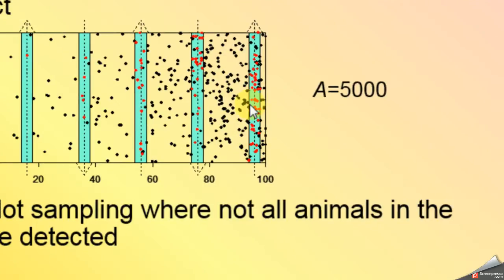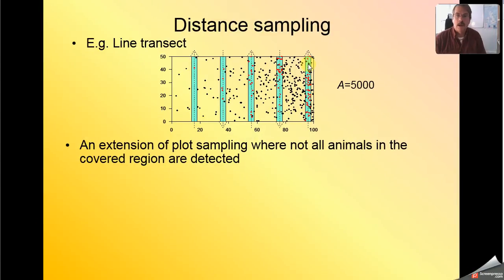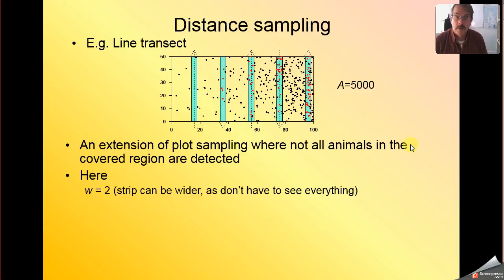If you look closely at that plot, you'll see not only red dots inside the green boundaries, but also a few black dots. Those are animals that lived inside our study area that we didn't detect. So we've now relaxed the assumption that we employed previously, namely that everything inside our covered region was detected by us. We've now made the strips a bit wider because we don't have to bring our effort in close to live up to the assumption that we see everything inside the strip.